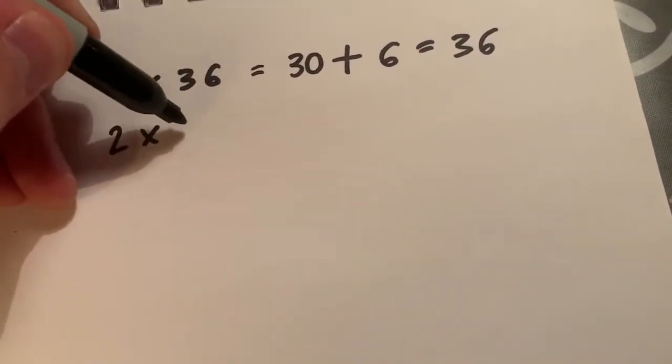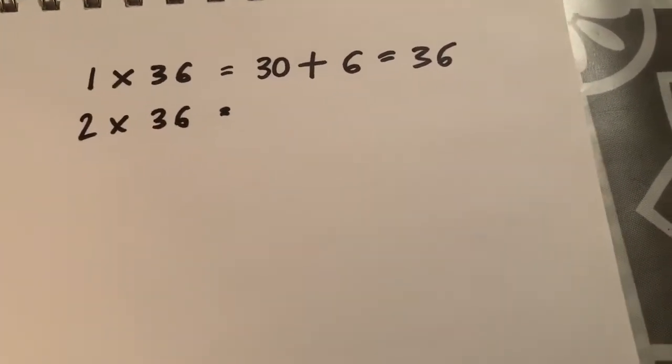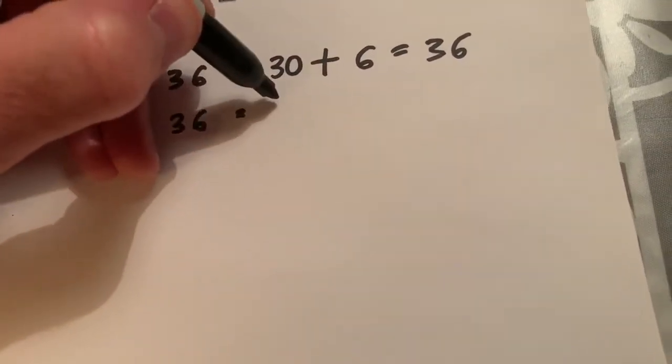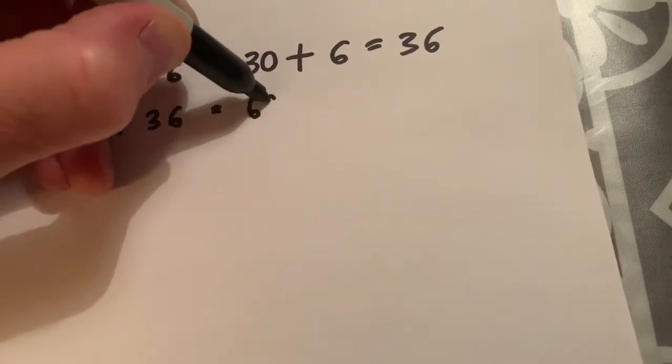So unless you're very, very numerate, you're going to find it hard to calculate that unless you work it out beforehand and write it down in the form of a fact box. Now remember here, I'm just using my 3 times tables knowledge.